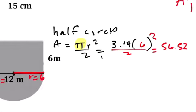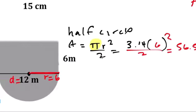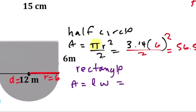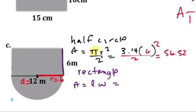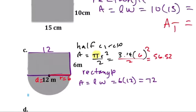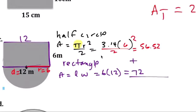And then you take the rectangle. Area of it, length times width. The length is 6, the width is 12, which is the same thing as over here. 6 and 12, we get 72. And what you do is add them together at last. So add them together, you get total area equals to 128.52 meters squared.